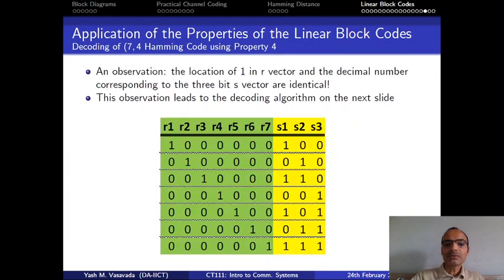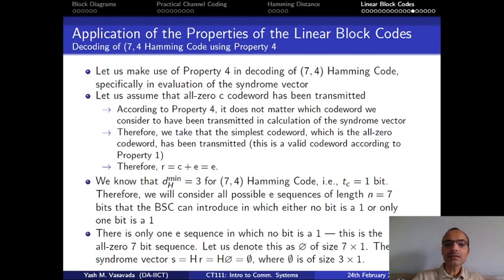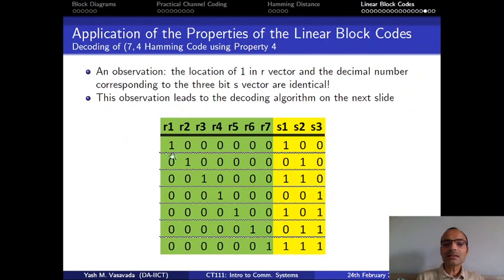Is to consider now this seven possible vectors r, now we take them as actually vector e. We will take them as vector e. Vector c, we will now not assume that it is 0, we will actually go one by one. In case of Hamming code, we will take first codeword of the Hamming code, which is all 0 codeword. We will go to the second one, then third one. We will go over all 16 codewords. And to each codeword, we will add this seven e-vectors.